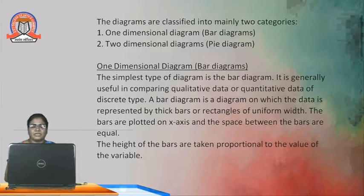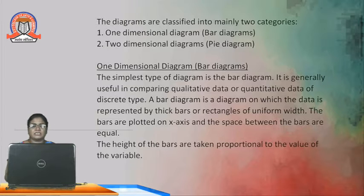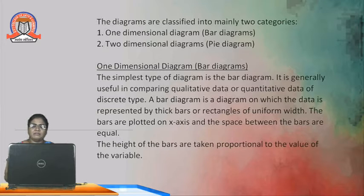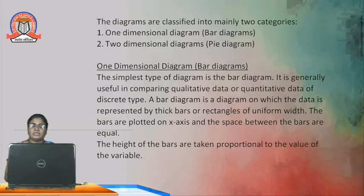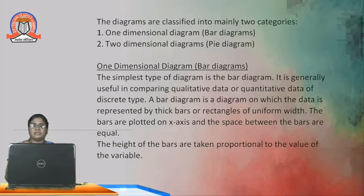There are two types of diagrams: one-dimensional diagrams and two-dimensional diagrams. In one-dimensional diagrams, we are going to see the bar diagram — this is the simplest type. It is generally useful for converting qualitative and quantitative data into a diagrammatic representation. The bar diagram uses rectangle bars on the XY axis. The given data is taken on the X axis and the frequency values are taken on the Y axis. The height of the bars is proportional to the value of the variable.